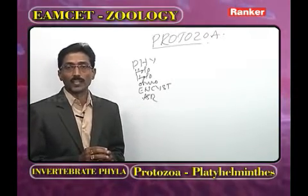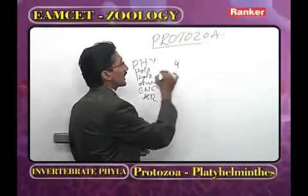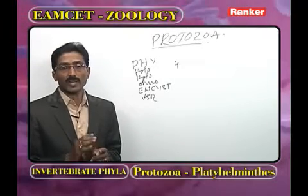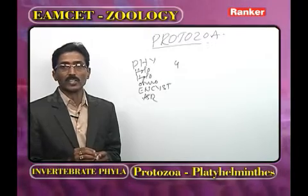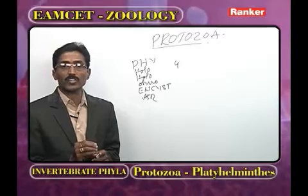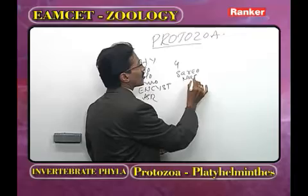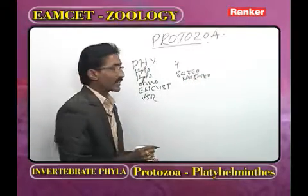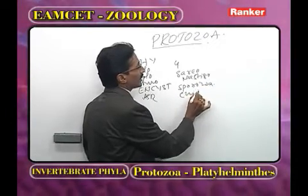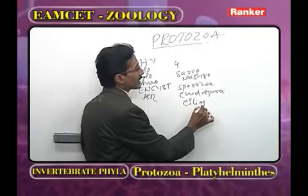Phylum Protozoa is classified into four subphyla. The unit for classification is locomotory organelle and nuclei. The first subphylum is Sarcomastigophora, second is Sporozoa, third is Cnidospora, and the last is Ciliophora.